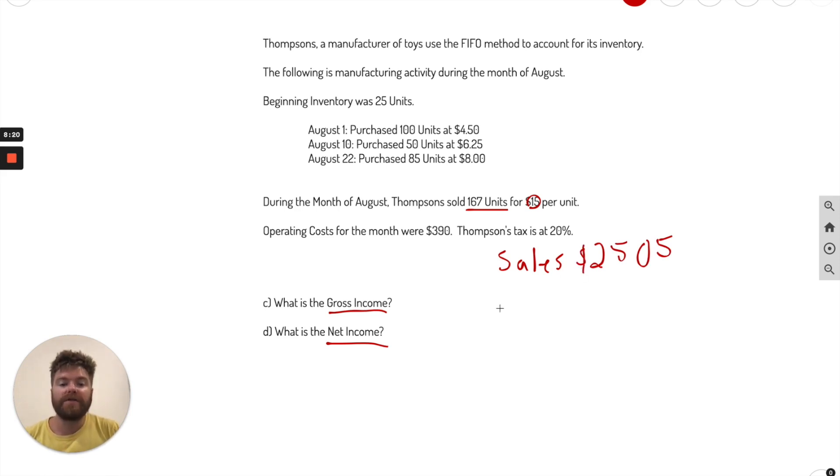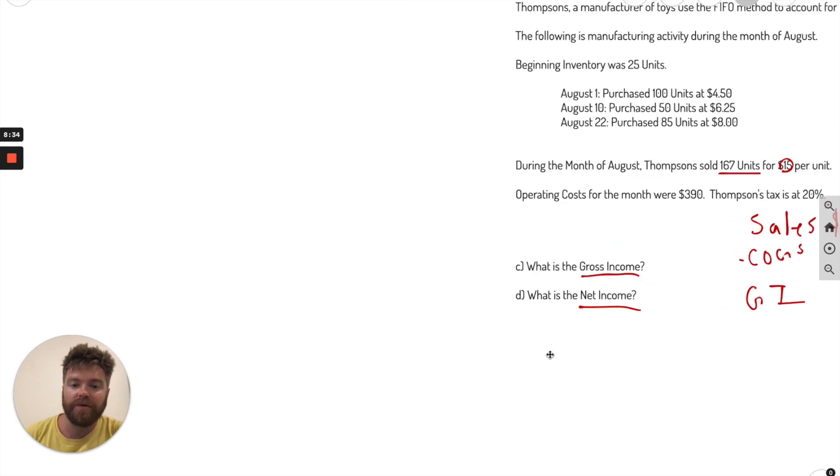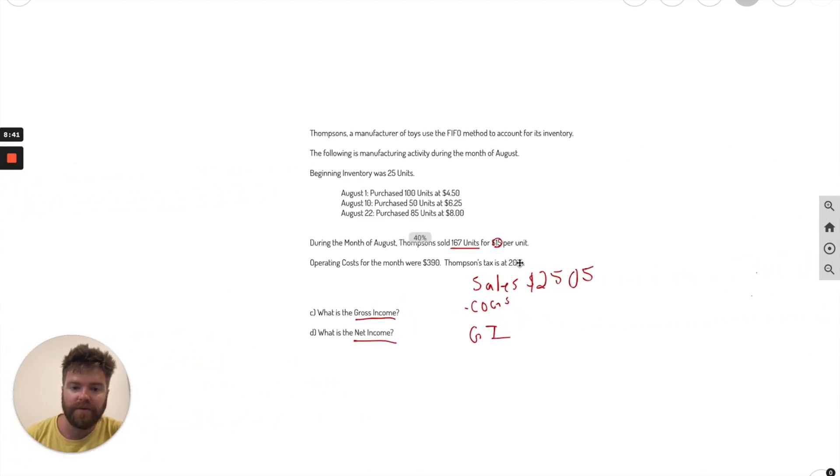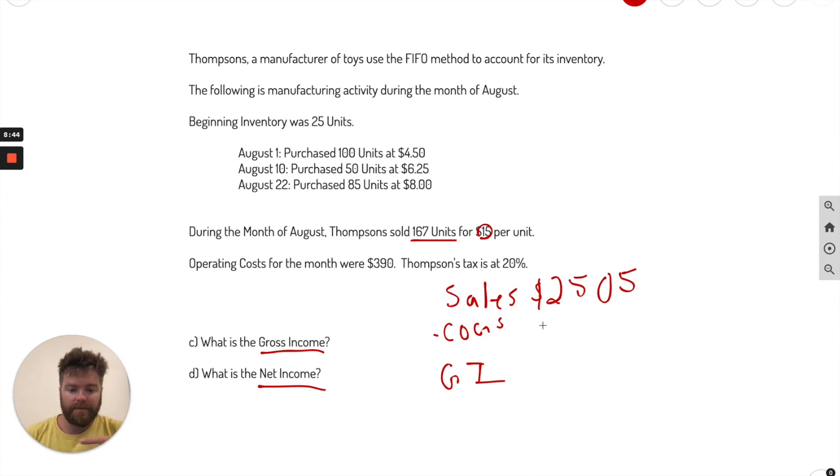Now what goes below sales? We're trying to get to gross income, if you remember. So I'll just call it GI for short. We're trying to get cost of goods sold, because that's what you subtract here to get to gross income. Luckily, we already got it, right? $812.50. Simple. So $812.50. Let's go ahead and subtract it out. And we got $2,505 minus $812.50. Kind of an awkward number, but that's okay. $1,692.50.